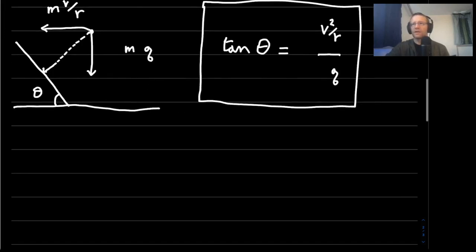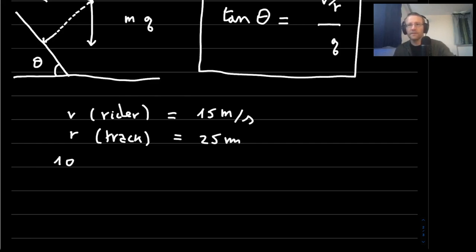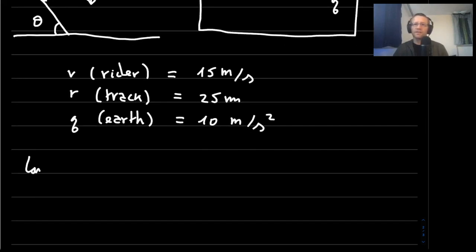And we can give some example calculation. So if we have a rider or skater who goes at about 15 meters per second, which is about 50 kilometers per hour, and if we have a radius of the track which is about 25 meters, and we know that the Earth's gravitational field is about 10 meters per second squared.